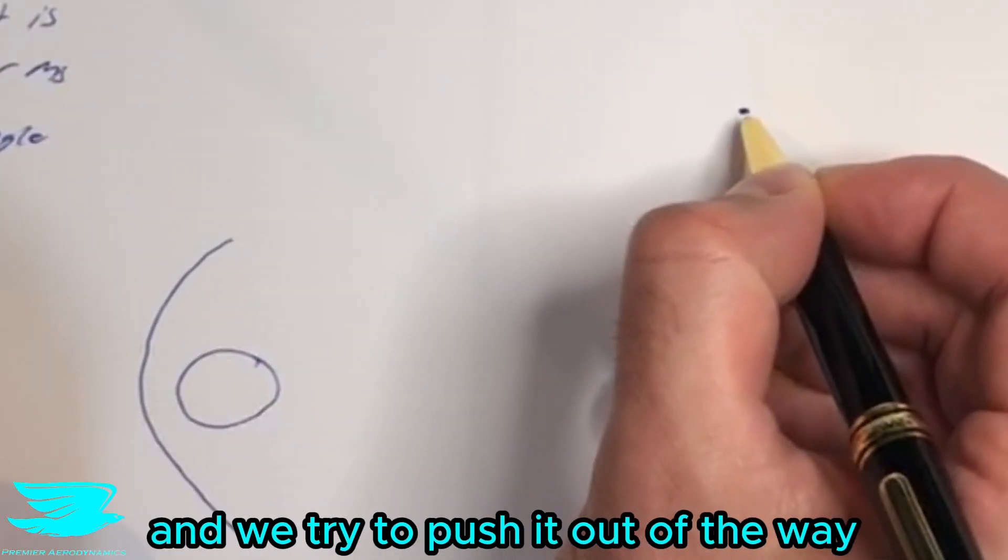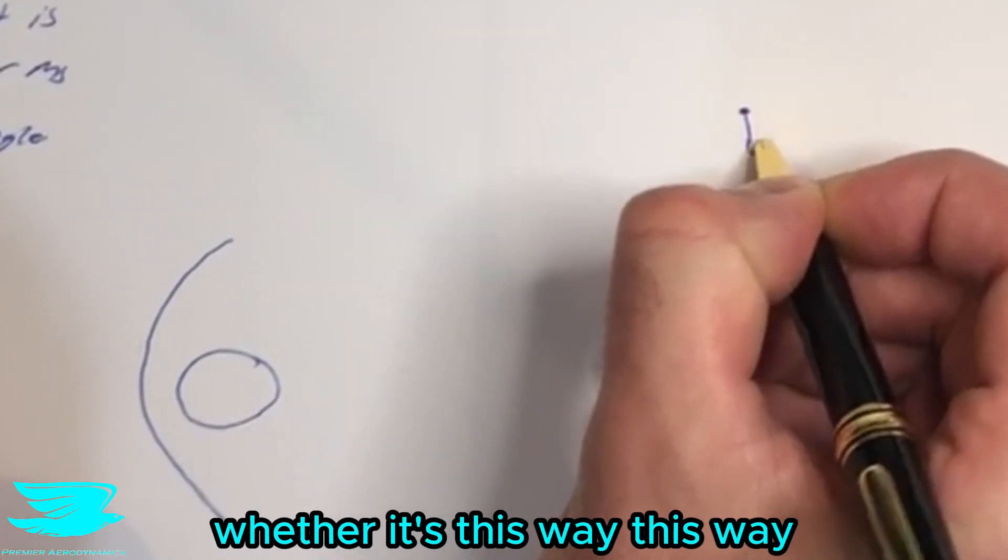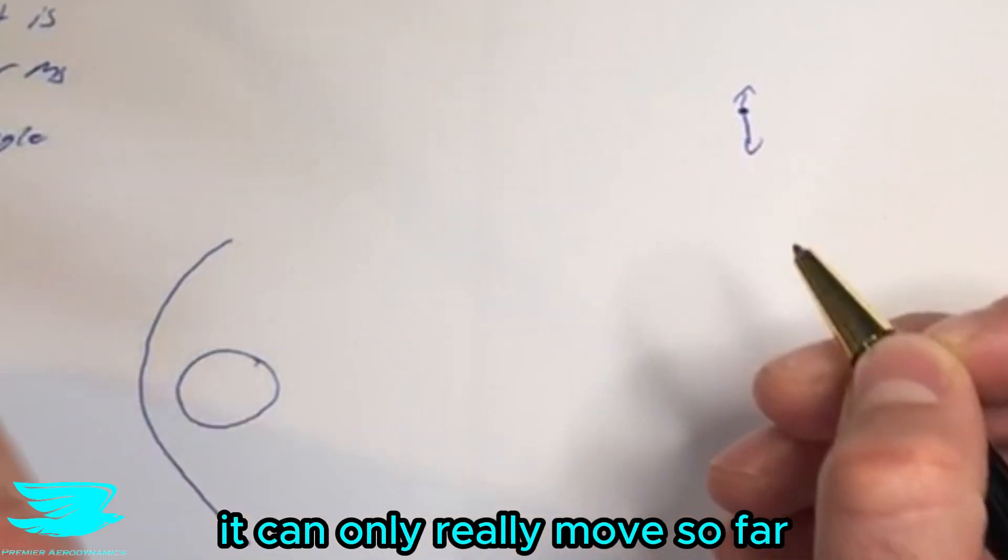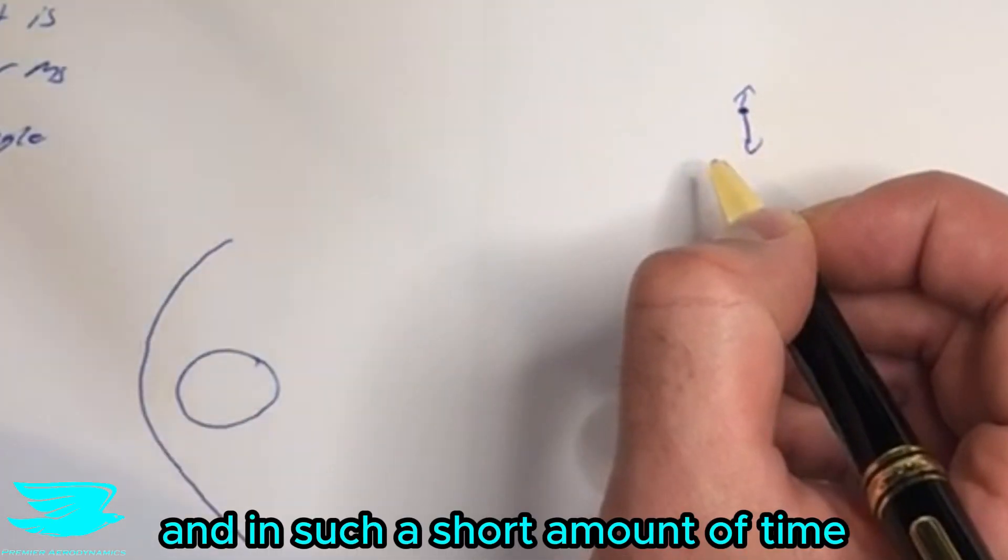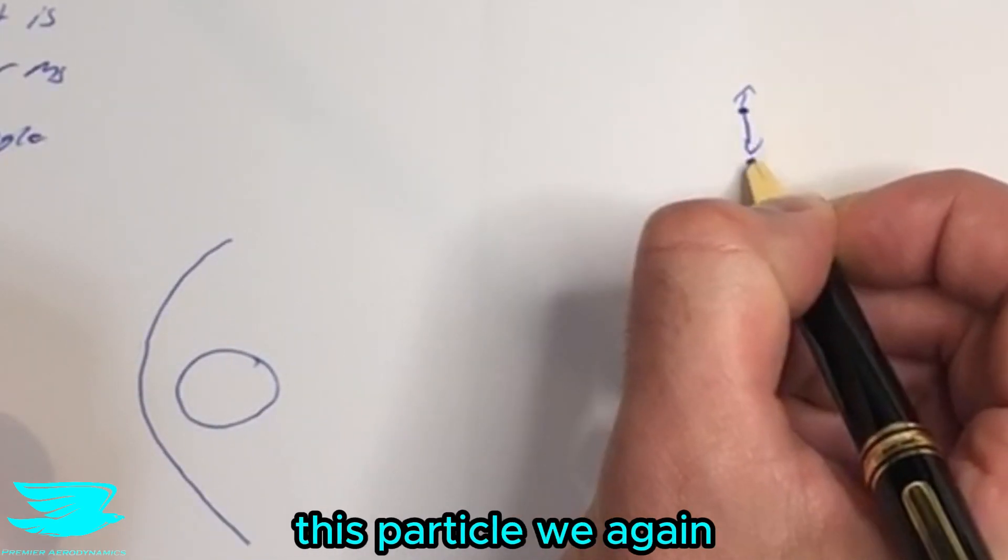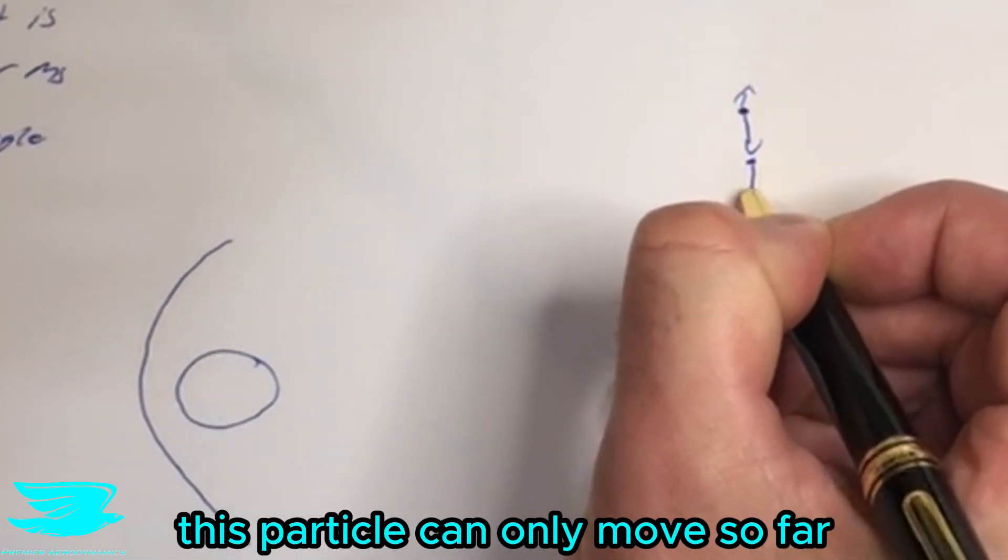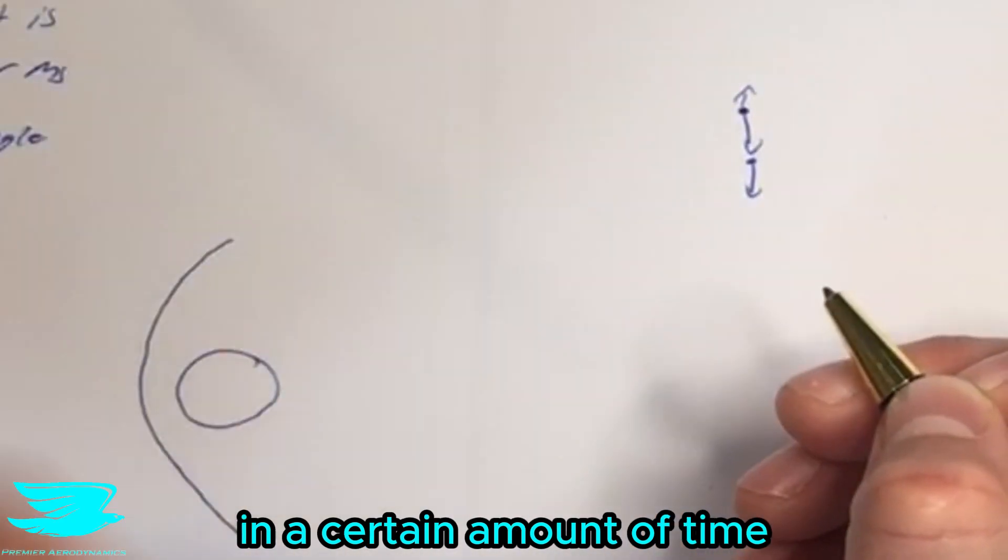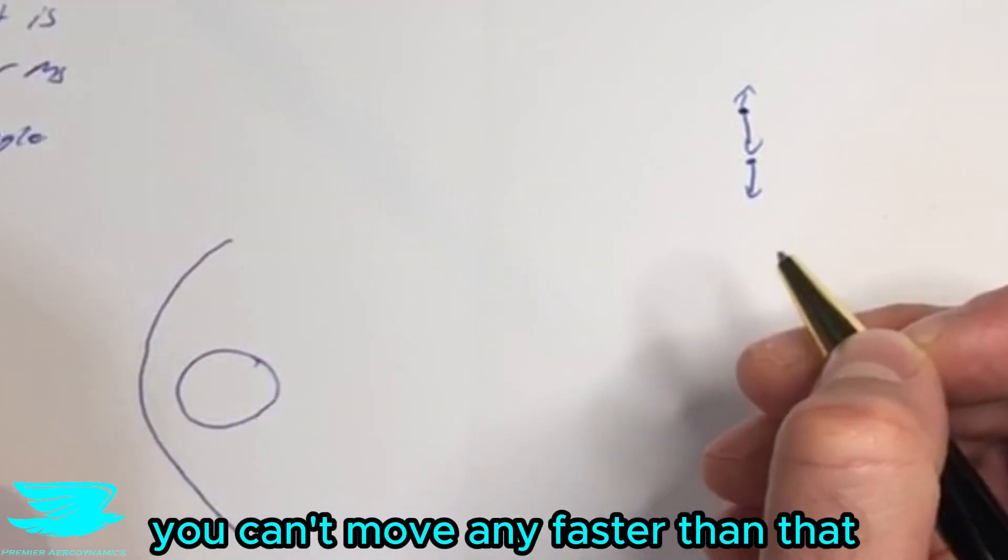Let's say we have a particle here and we're trying to push it out of the way, whether it's this way or that way, it doesn't really matter. It can only move so far in such a short amount of time. Let's say we have another particle right here. We're trying to push this particle into this particle. Well again, this particle can only move so fast in a certain amount of time. Like that's just how fast it can move. It can't move any faster than that.